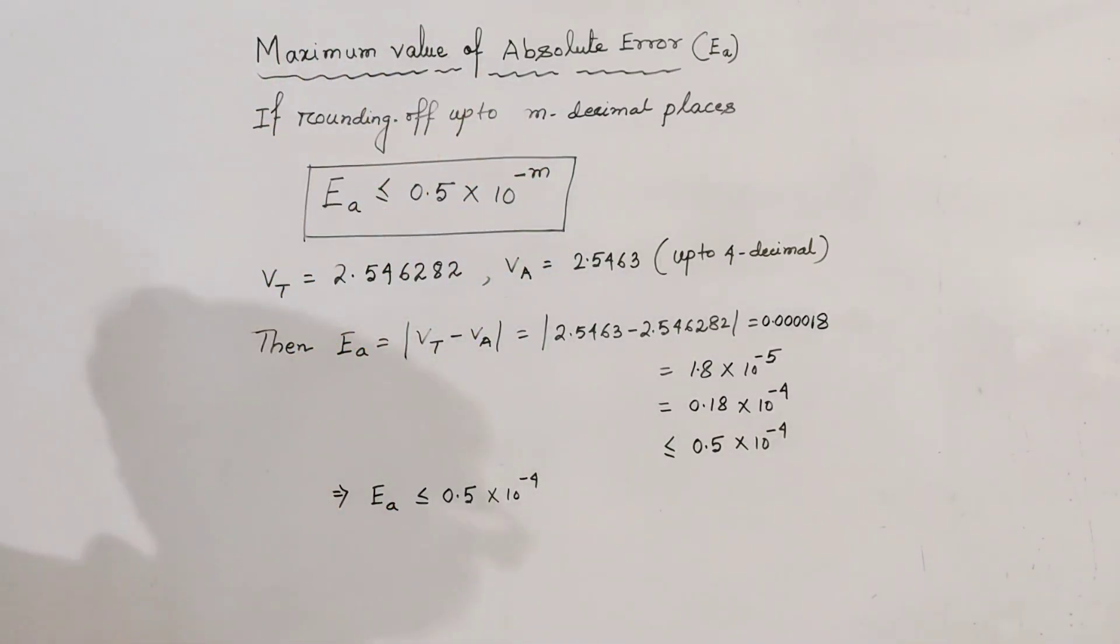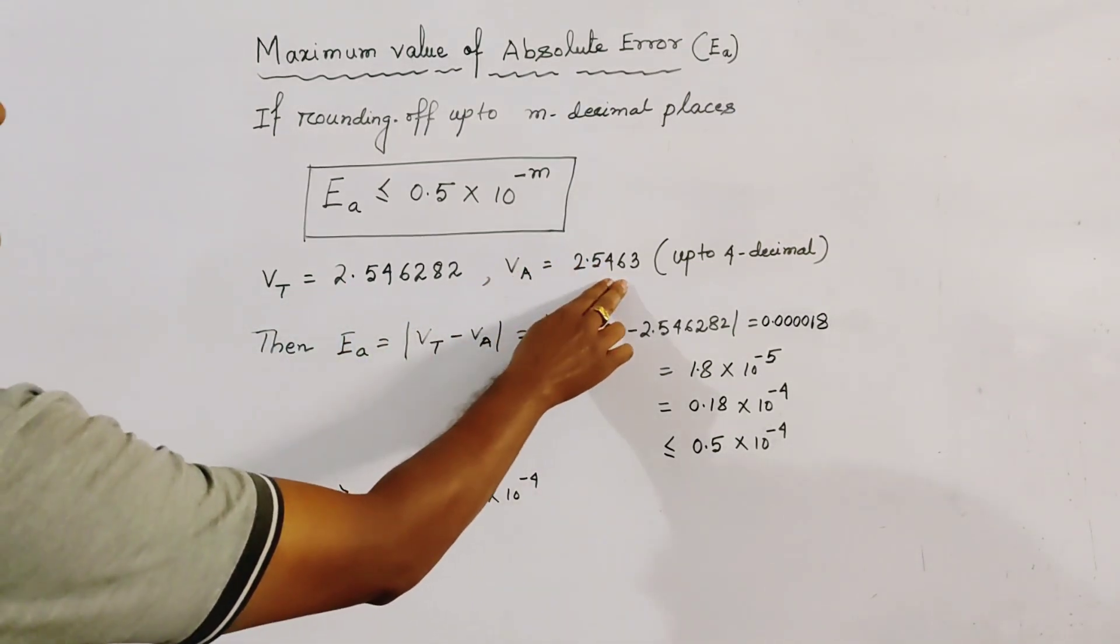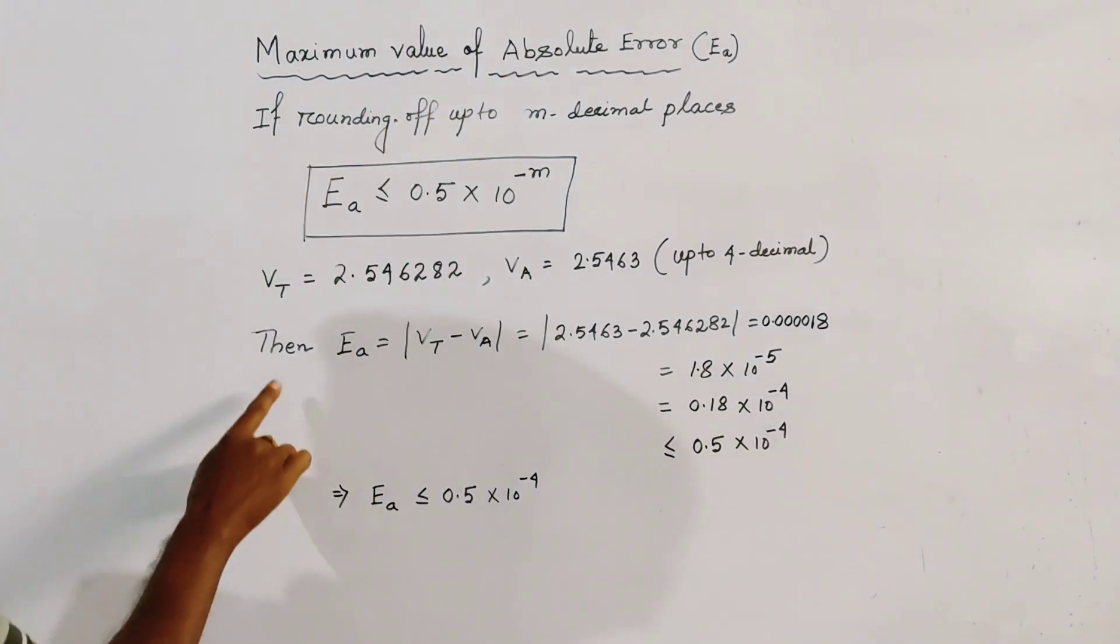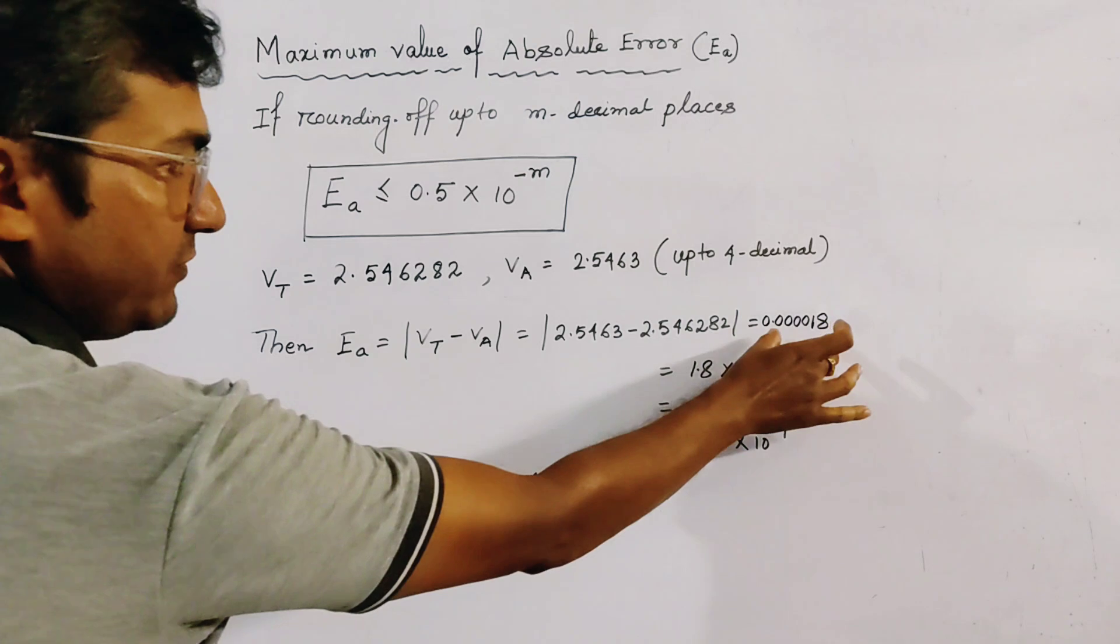This is verified by an example. This is the true value and this is the approximate value. This is up to 4 decimal places. Then absolute error is mod of Vt minus Va, which is the difference.